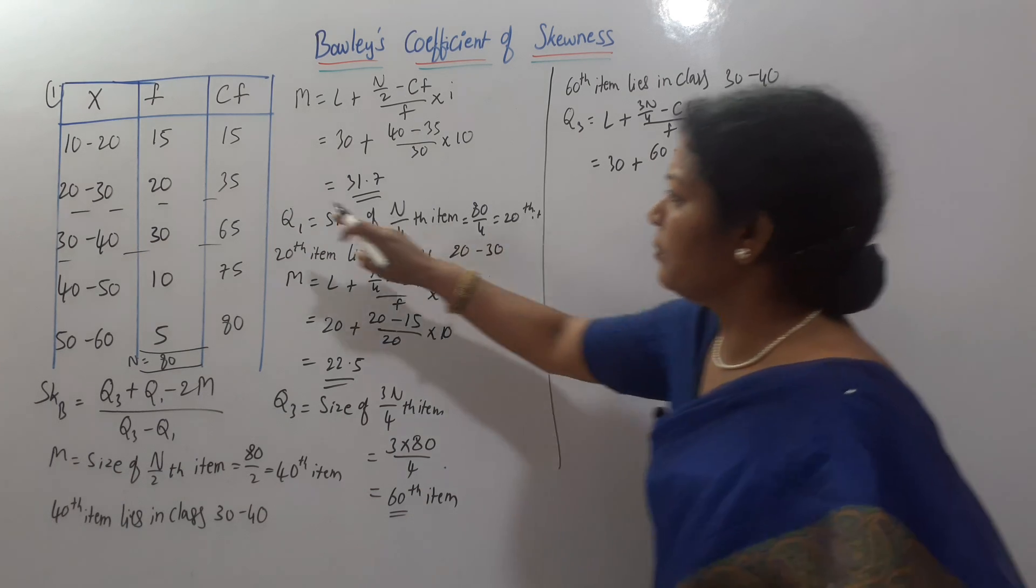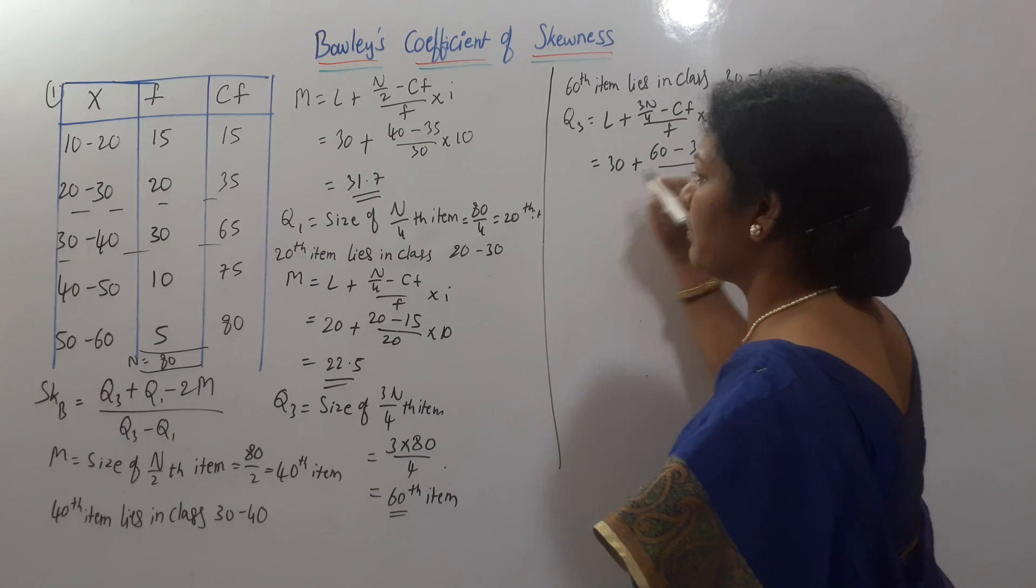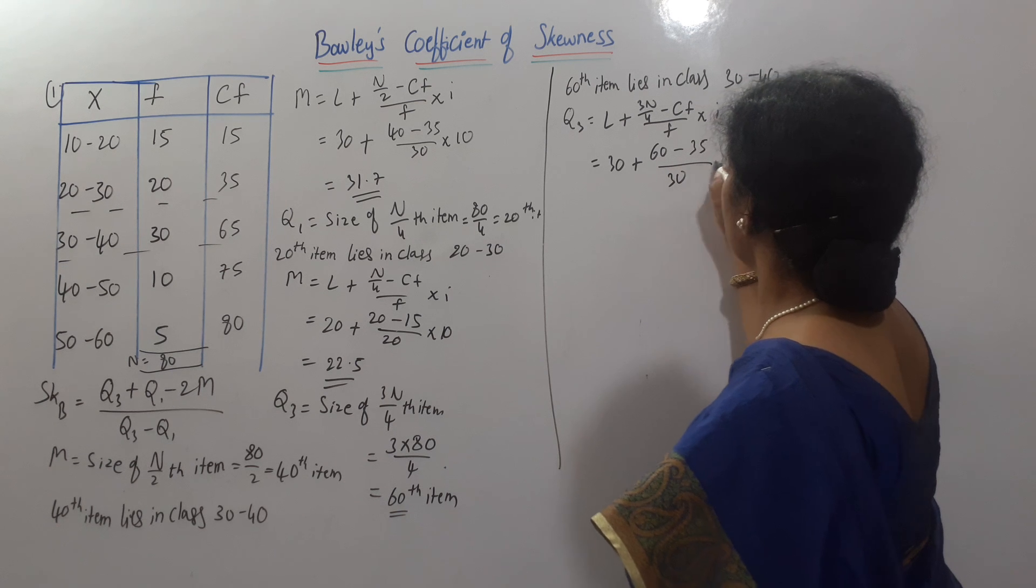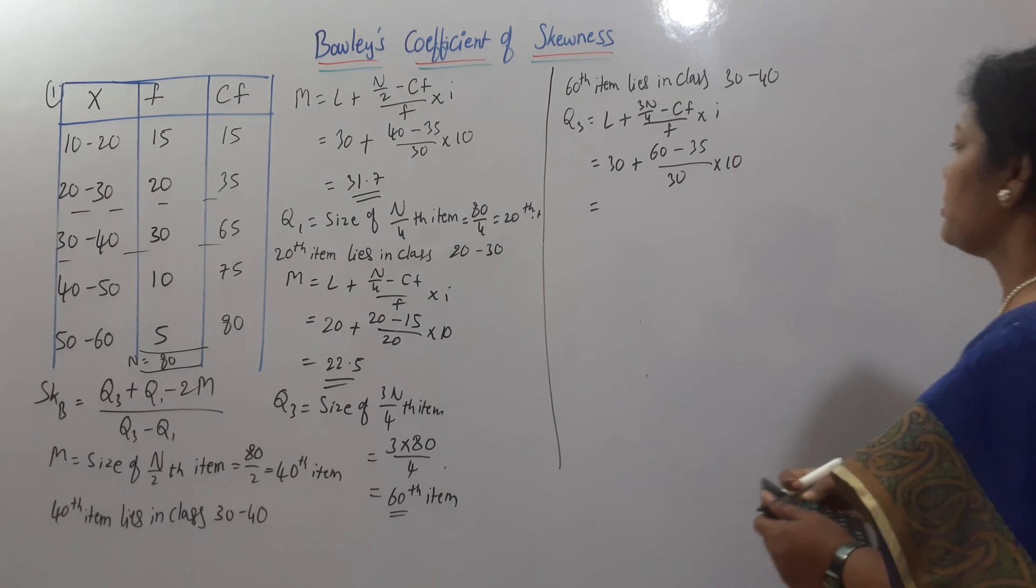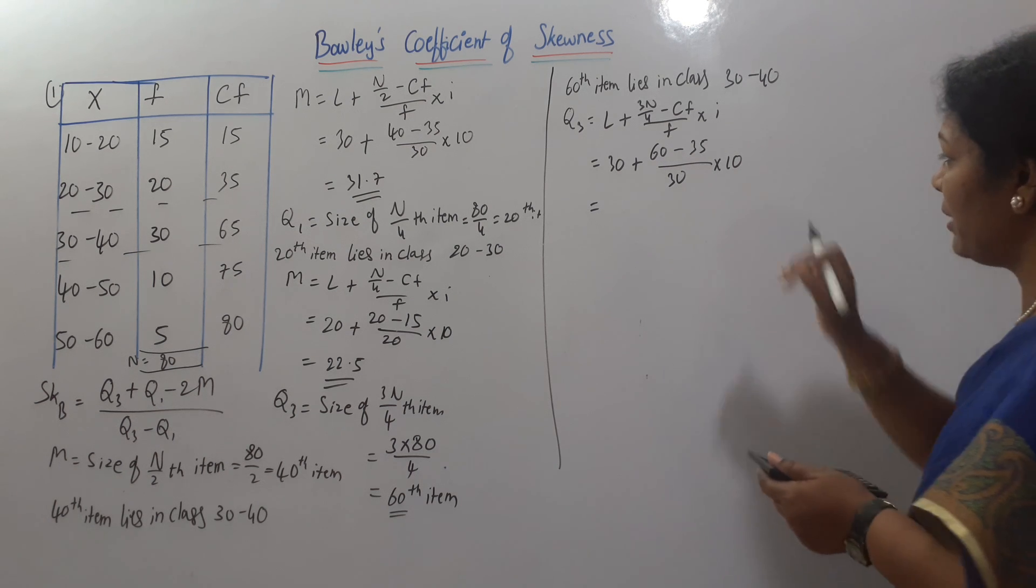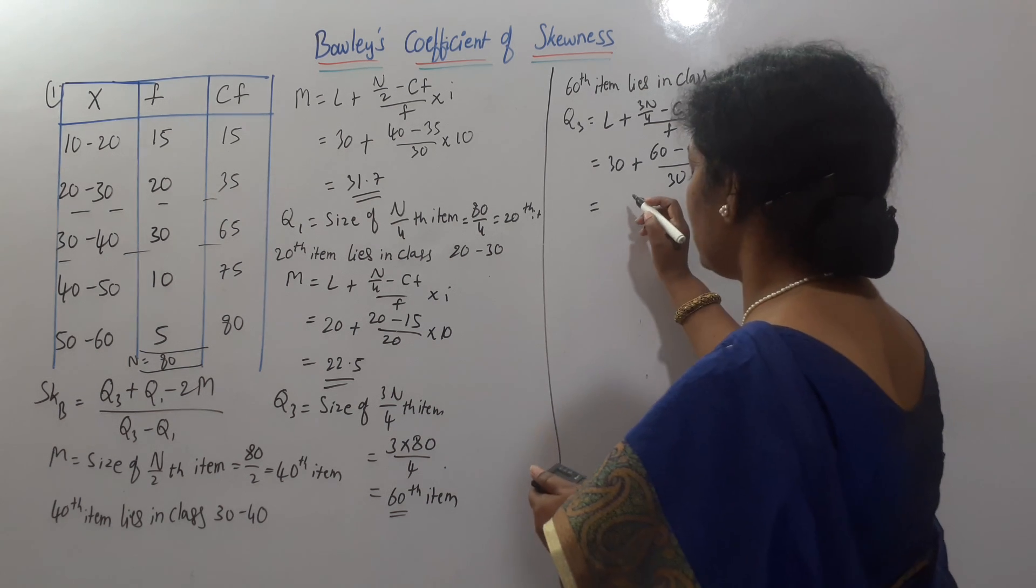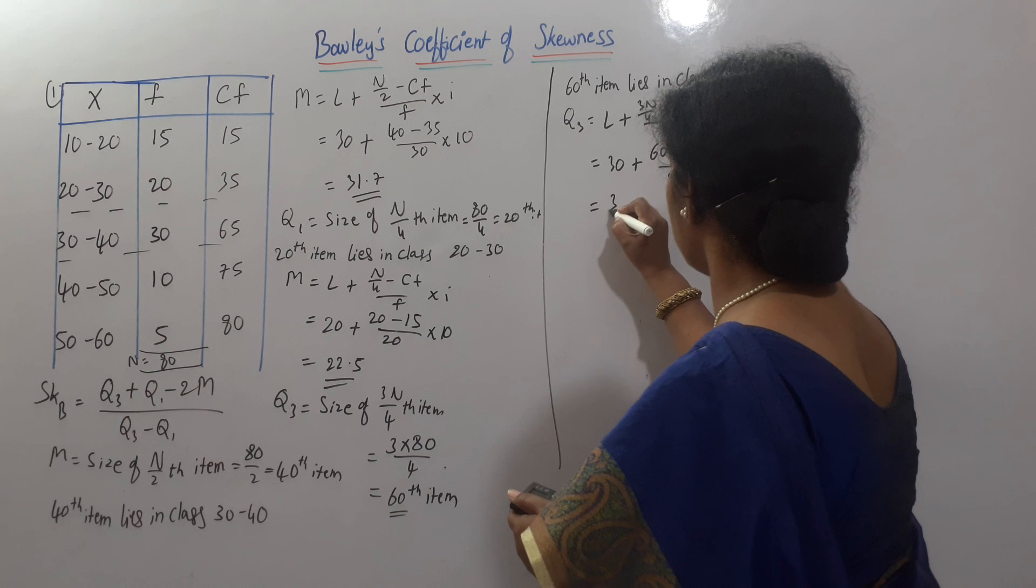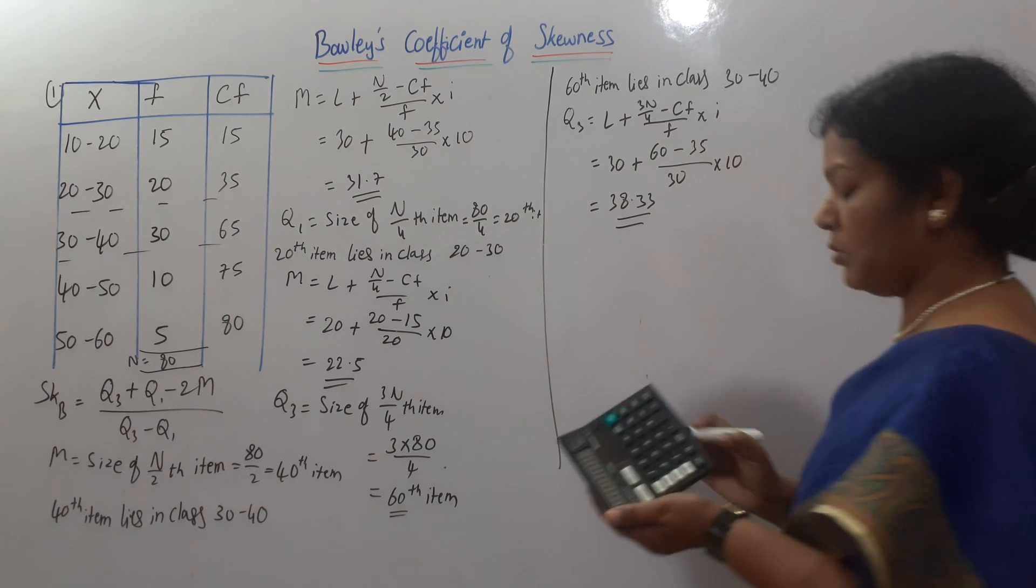Frequency is 30. I is 10. So, 60 minus 35 means 25. 25 into 10, 250. 250 divided by 30. Comes to 8.33, means 38.33. This is Q3.